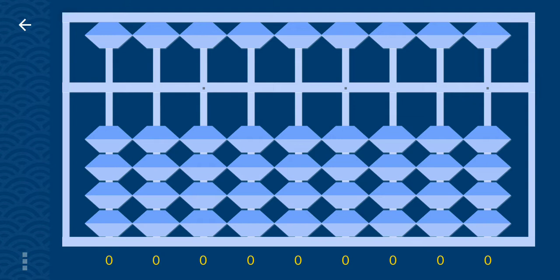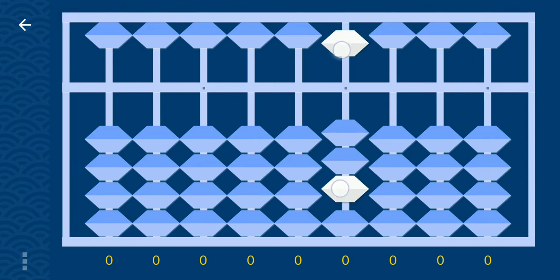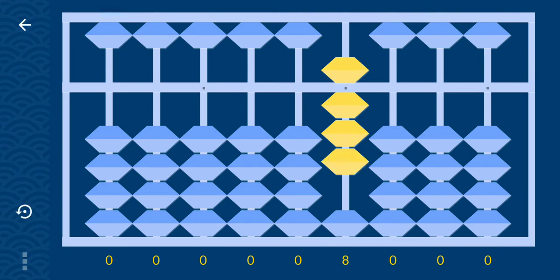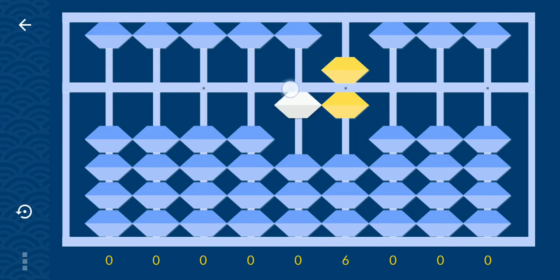Make 8 directly. Add 8, minus 2, plus 10.